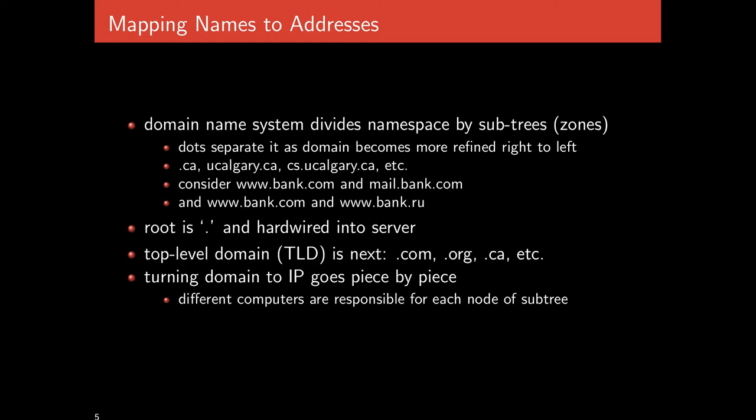The .ca represents Canada — that's at the rightmost part, the coarsest level. Other universities in Canada will also end in .ca but have a different middle component. The .cs represents the computer science department. Other departments at the University of Calgary will have their own domain name with a different subdomain, but the .ucalgary.ca suffix remains the same.